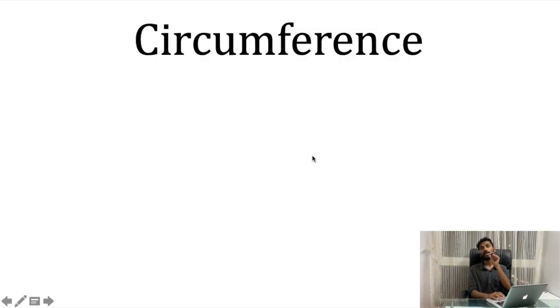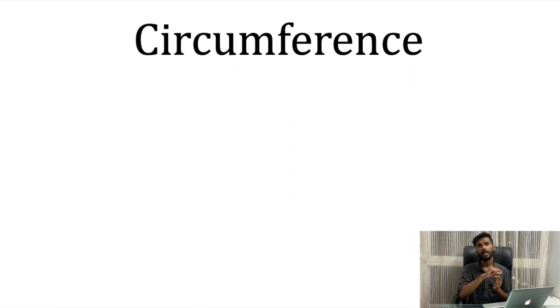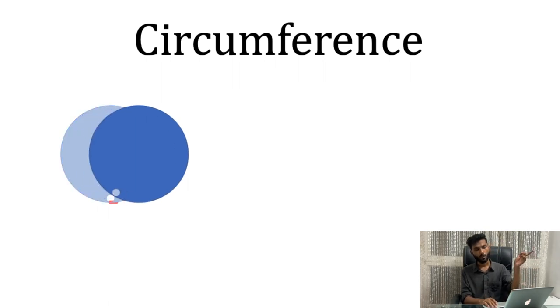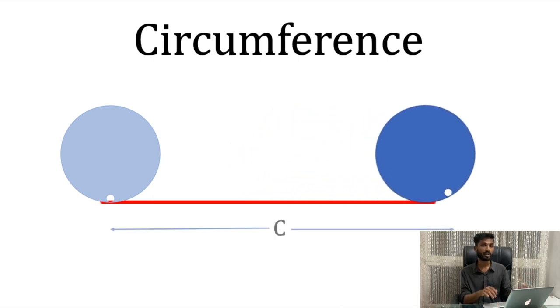Before starting, we have to understand what is circumference. Circumference is nothing but the total outermost length of the circle. If the circle rotates one complete rotation, it covers one circumference. Simple as that.